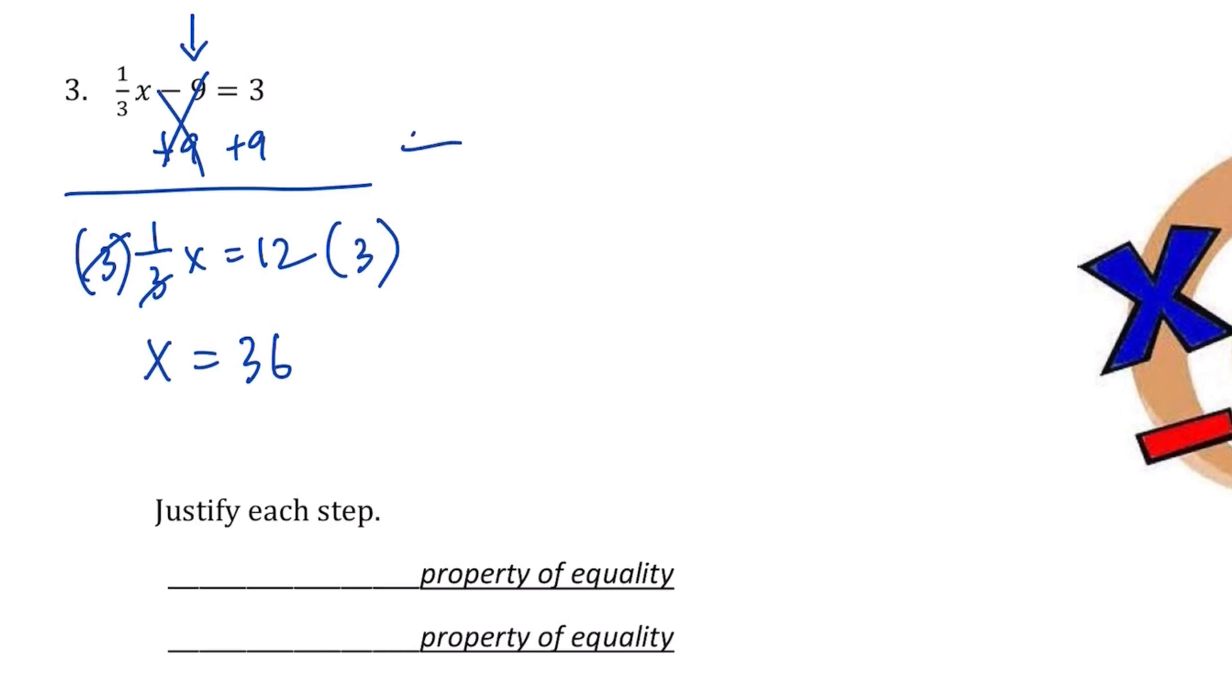And since the first thing I did was add 9, I'm going to write the addition property of equality. And since the second thing I did was multiply, I'm going to write multiplication property of equality.